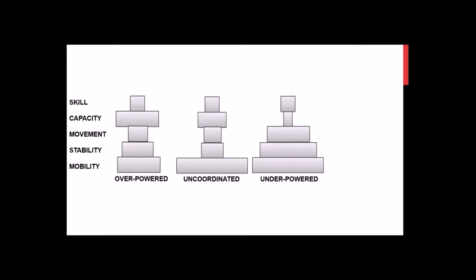The 'uncoordinated' pyramid describes athletes — often younger girls — who are extremely mobile, sometimes hypermobile, but lack stability. They need a lot of basic general strength work to ensure they can stabilize their body properly. It would be an error to skip that phase and move on to developing complex strength with heavy loaded movements before ensuring they can effectively stabilize.